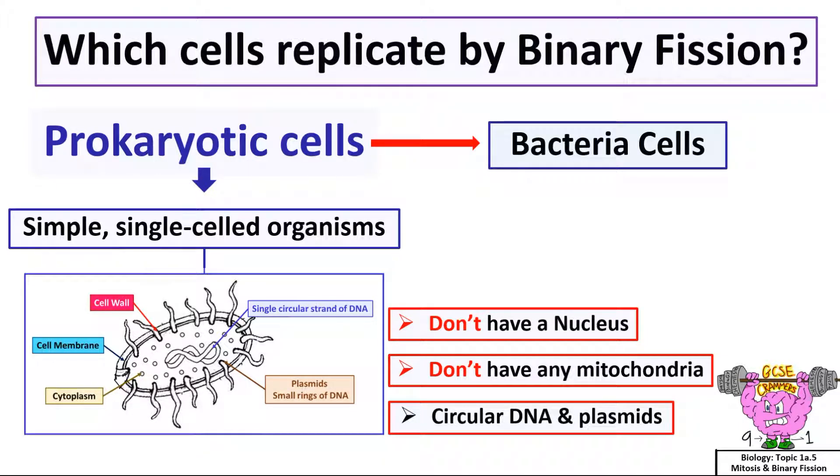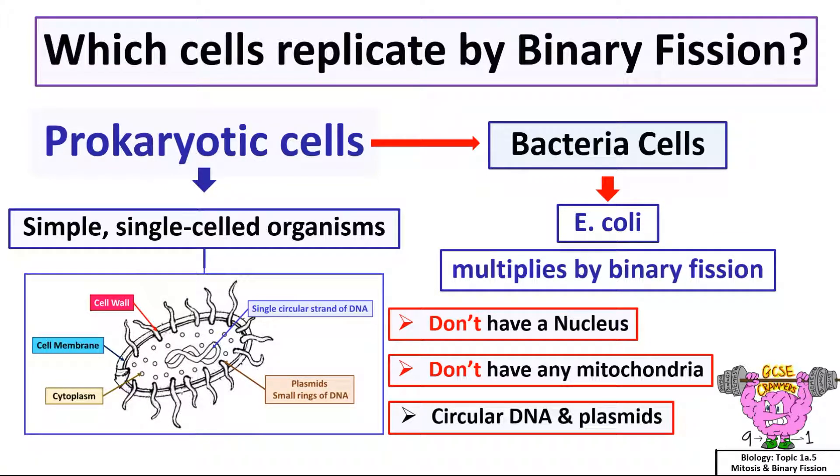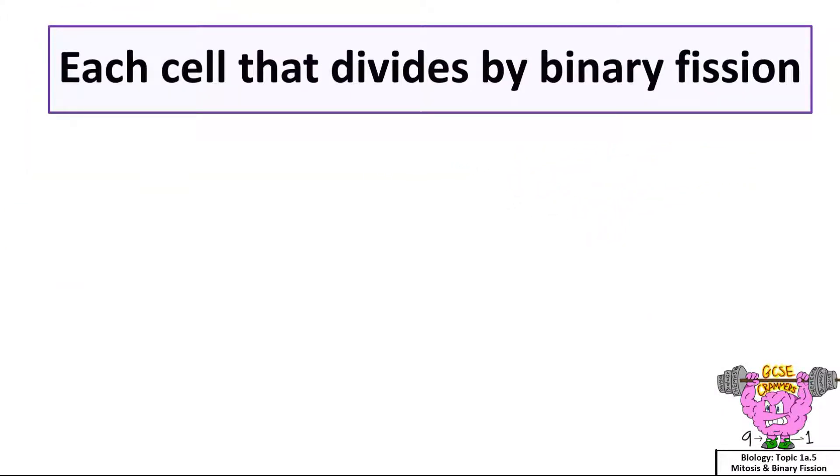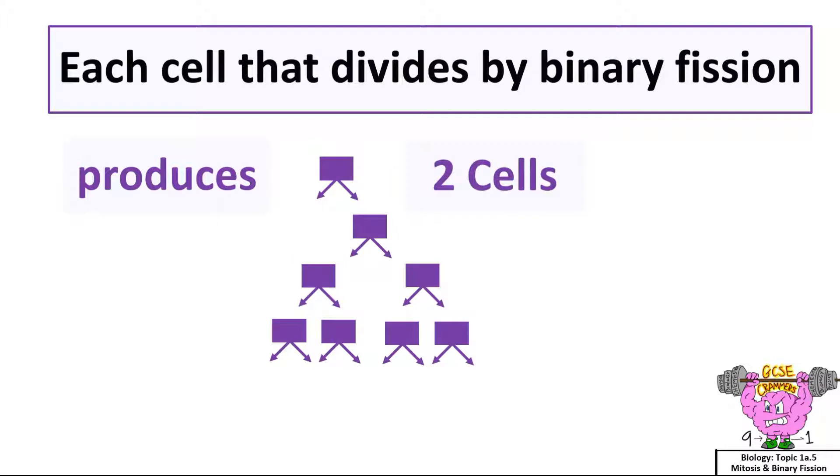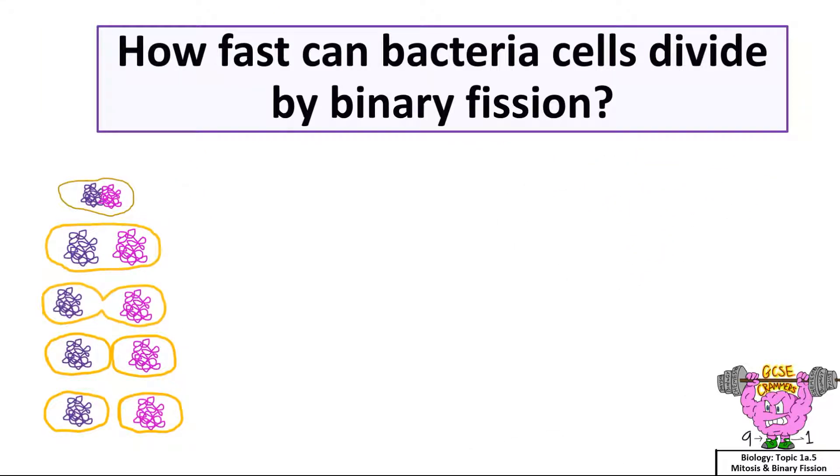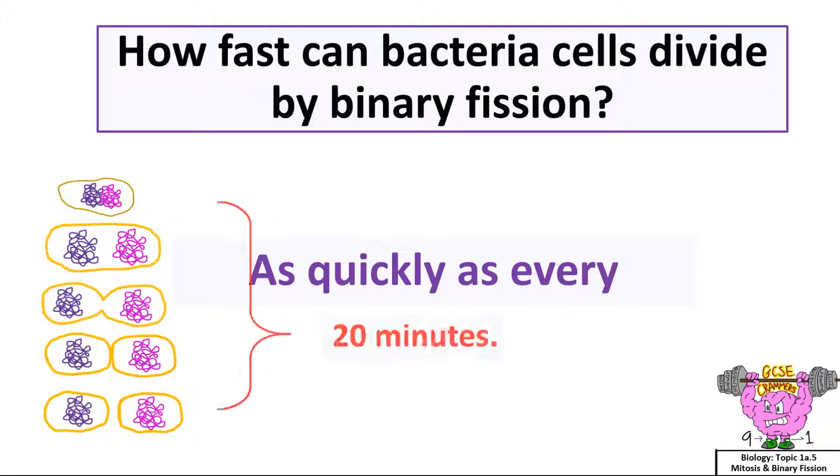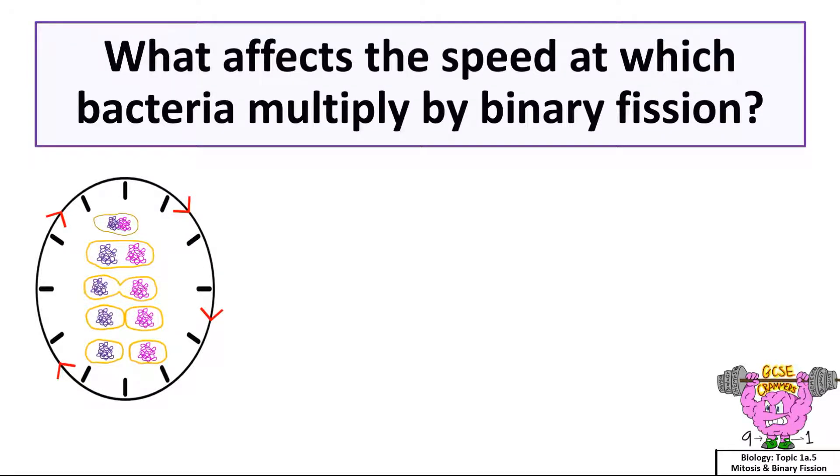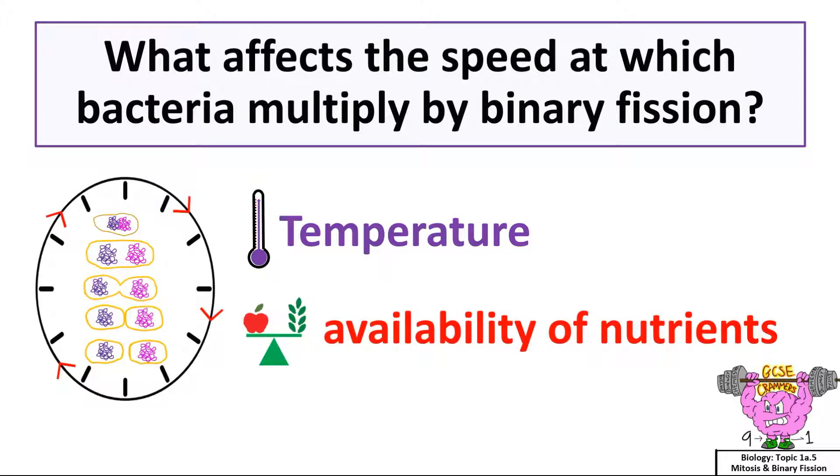A bacterial disease called E. coli can spread very fast because it multiplies by binary fission. Each cell that divides by binary fission produces two cells that continue multiplying rapidly. That is why a virus can spread very fast. How fast can bacteria cells divide by binary fission? As quickly as every 20 minutes. What affects the speed at which bacteria multiply by binary fission? Temperature and the availability of nutrients.